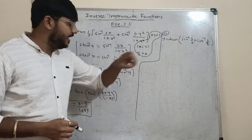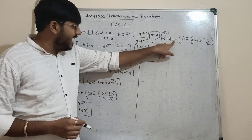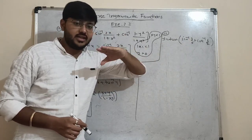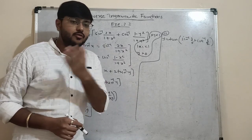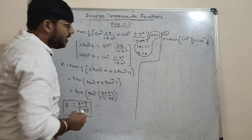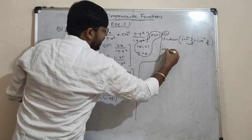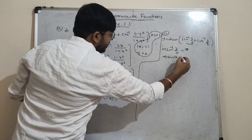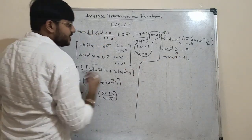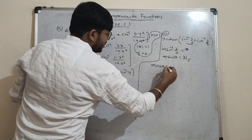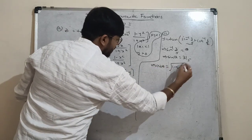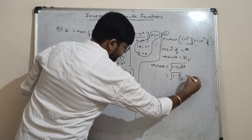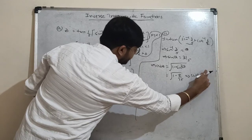When you have tan outside and sin⁻¹ or cot⁻¹ inside, convert them in terms of tan⁻¹ so we can apply the addition formula and cancel function with inverse. Let sin⁻¹(3/5) = θ, so sin θ = 3/5. Then cos θ = √(1 - 9/25) = 4/5.